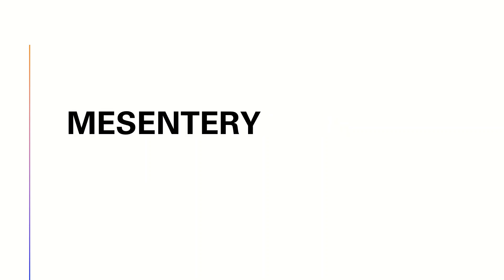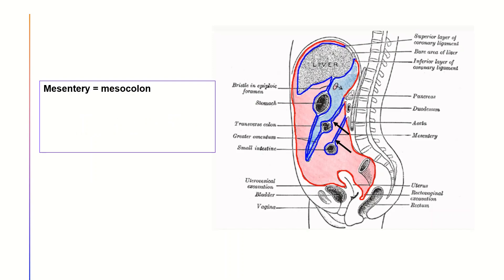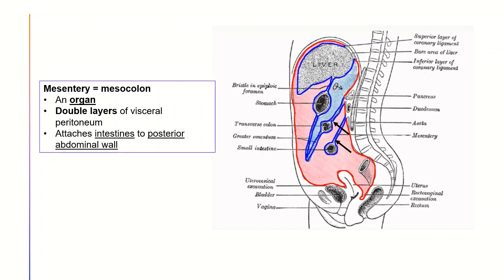Now, off to the mesentery. The mesentery is in fact considered an organ instead of just some connective tissue. It is actually a grand word referring to a double-layered visceral peritoneum that attaches our intestines to the posterior abdominal wall. It is also called the mesocolon.